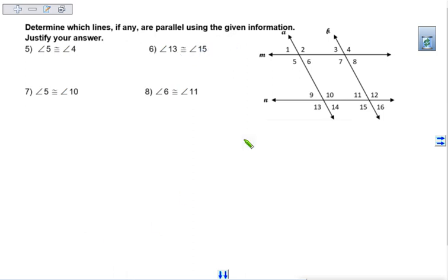So the first one we're looking at angle 5 and angle 4. Cover up this bottom if it confuses you. These are exterior angles on different sides of the transversal, so these are alternate exterior angles. Our transversal is line M. That means that line A and B are the ones that are parallel.